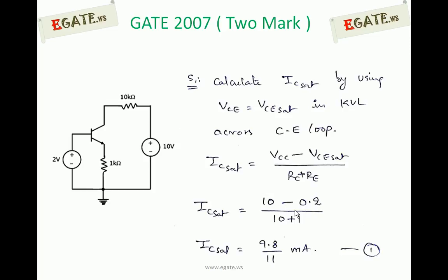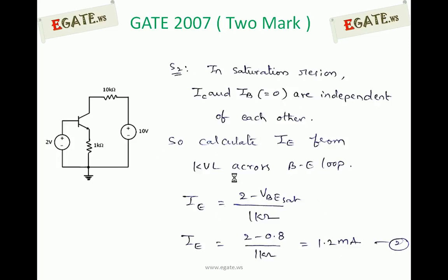Step 2: Calculate emitter current due to input KVL across the base-emitter loop. In saturation, IC and IB are independent. KVL gives: 2V − VBE − IE × 1kΩ = 0. So IE = (2 − VBE_sat) / 1kΩ. Note that VBE saturation is 0.8 volts, even though VBE is given as 0.7 volts. Therefore, IE = (2 − 0.8) / 1kΩ = 1.2 milliamperes.